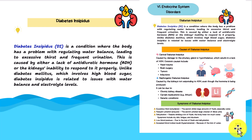Diabetes insipidus, DI, is a condition where the body has a problem with regulating water balance, leading to excessive thirst and frequent urination. This is caused by either a lack of the antidiuretic hormone, ADH, or the kidney's inability to respond to it properly. Unlike diabetes mellitus, which involves high blood sugar, diabetes insipidus is related to issues with water balance and electrolyte levels.